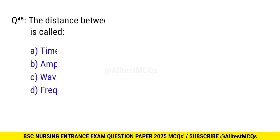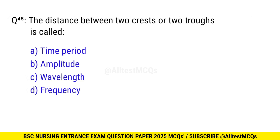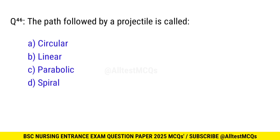Question No. 45: The distance between two crests or two troughs is called? The right option is C: Wavelength. Question No. 46: The path followed by a projectile is called? The right option is C: Parabolic.